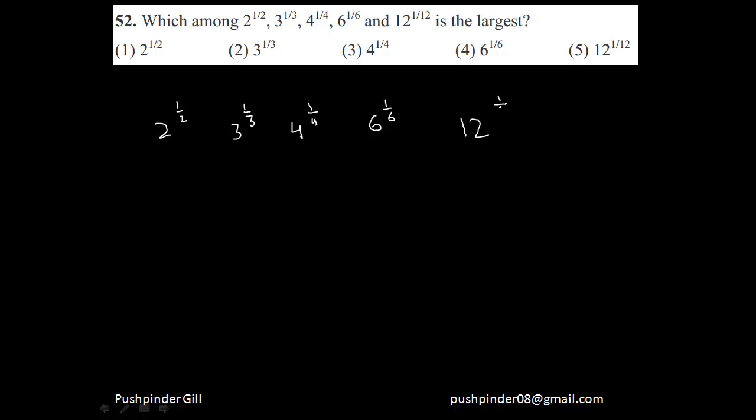Now, even if I give you a calculator, there's still a smarter way to do this question. You just find the LCM of all 2, 3, 4, 6, and 12. The LCM of all these options is 12.